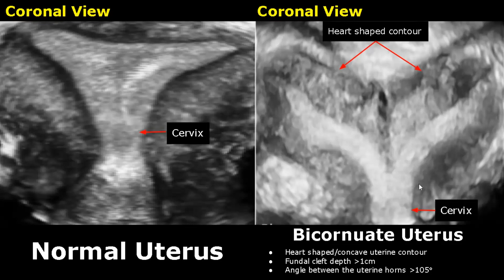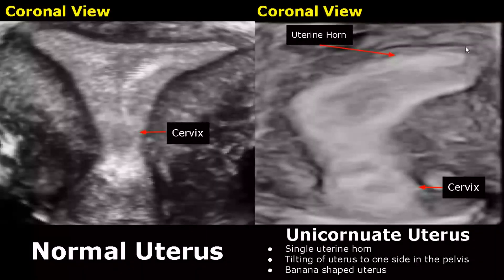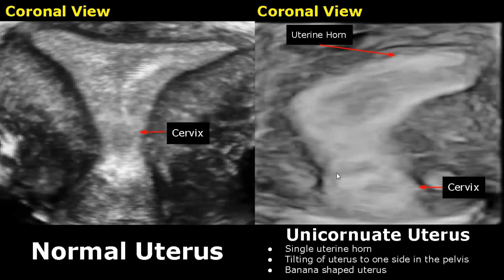A unicornuate uterus will have only one uterine horn connected to only a single fallopian tube. It is difficult to see on 2D ultrasound; we may see tilting of the uterus to one side in the pelvis. A unicornuate uterus has a banana shape and is seen very well in a 3D coronal image. Only a single uterine horn is found, and we can see the banana-shaped uterus tilted to one side.